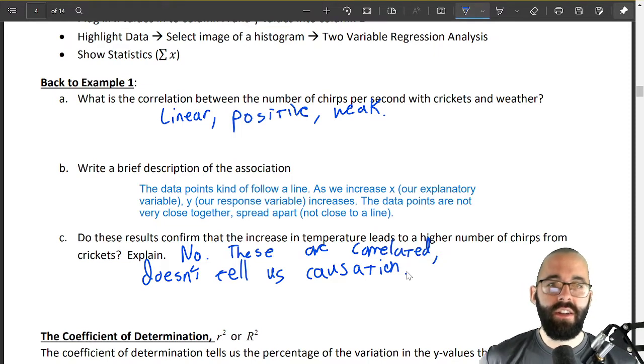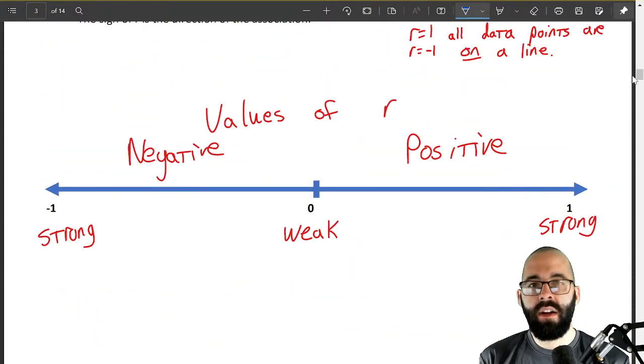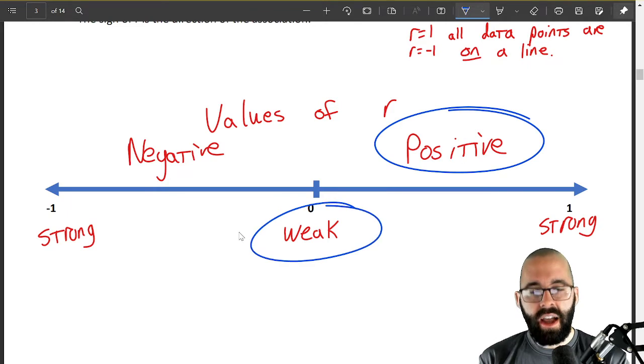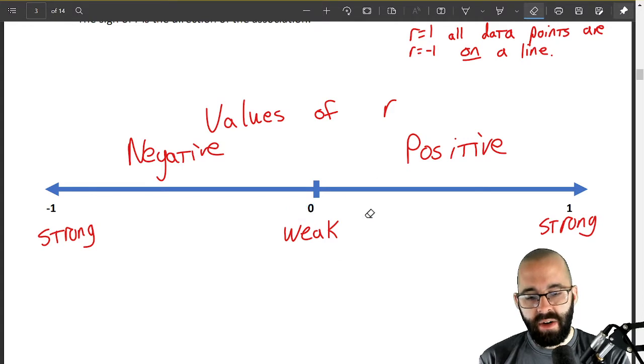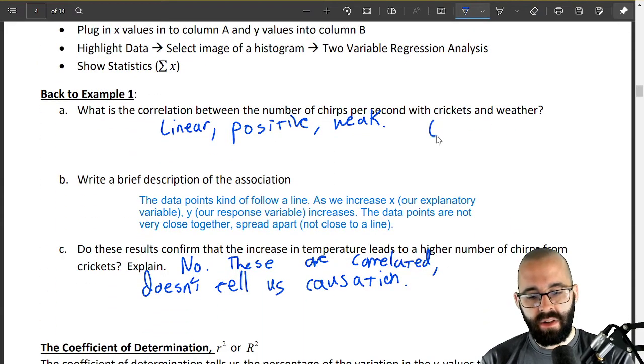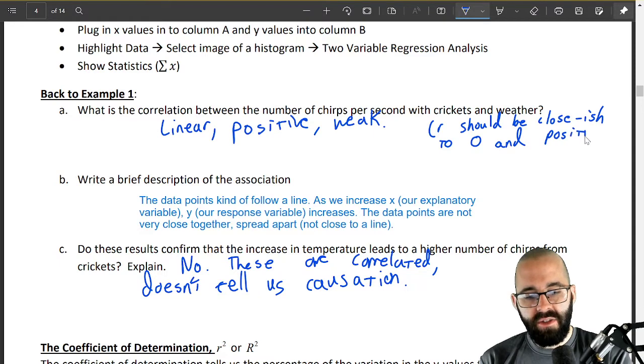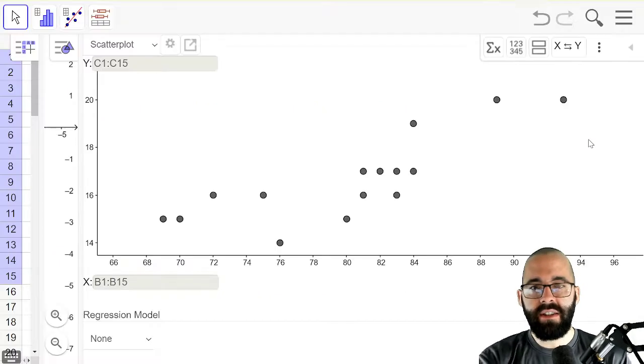Let's look at r for all of these. So if it's linear and positive and weak what do we think r is going to look like? It's positive and weak. So our r value should be also a positive number but since it's weak it should be close to zero. So we're looking for a number that's kind of close to zero and positive.